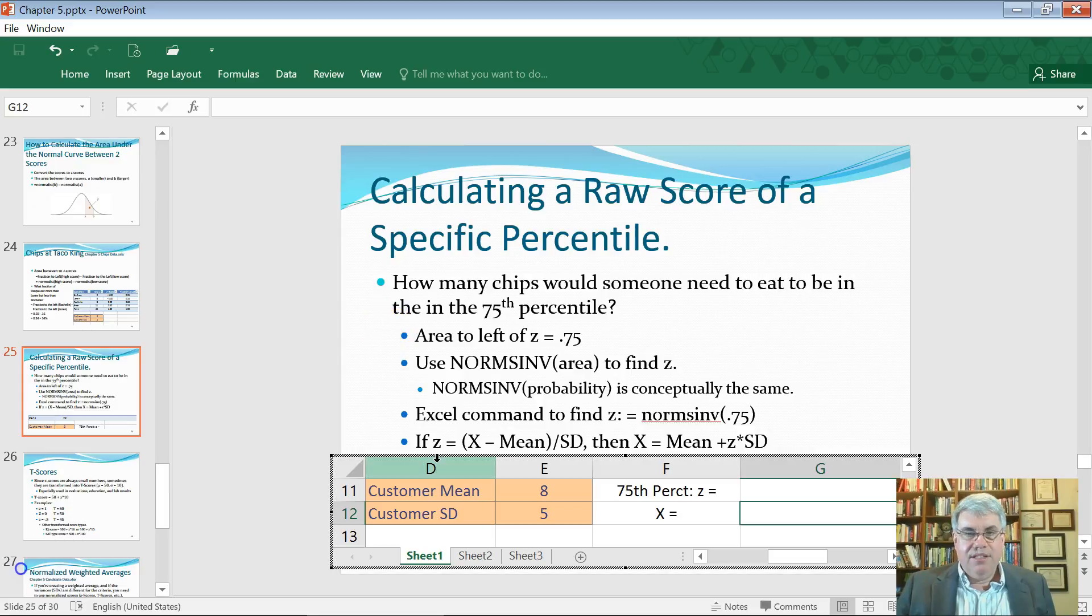To figure this out, we have to figure out first of all what z-value has an area to the left of it that equals 75 percent. And then once we figure out that z, we're going to convert that back to a raw score with the information that we have about the mean and the standard deviation.